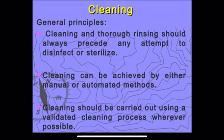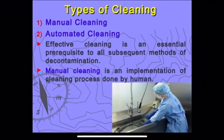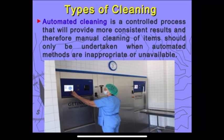Cleaning can be achieved by either manual or automated methods and should be carried out using a validated cleaning process wherever possible. Manual cleaning is done by a person. Automated cleaning is a controlled process that provides more consistent results, and manual cleaning should only be undertaken when automated methods are inappropriate or unavailable.